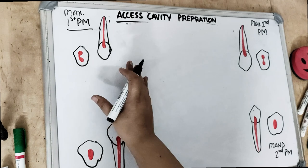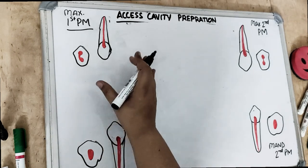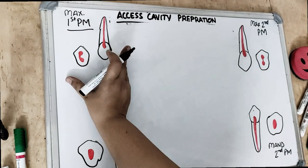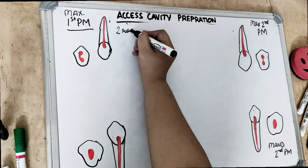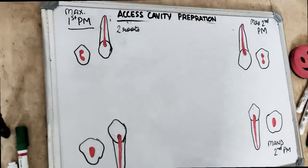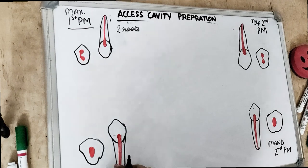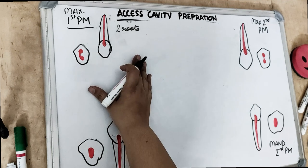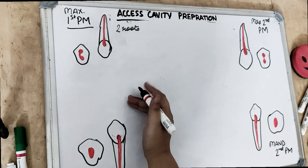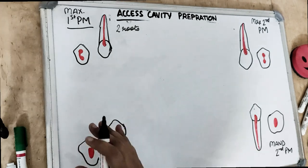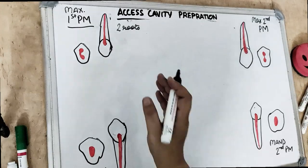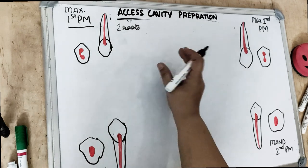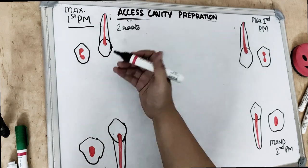Coming to the anatomy of the pulp cavity for the first premolar — now all of the premolars have only one root except the maxillary first premolar, which has two roots. The mandibular first premolar is the most complex one. Coming to the maxillary first premolar, we have two pulp horns under each of the cusps. There are two cusps and two roots — one buccal and one palatal. The buccal horn is prominent as the buccal root is prominent.